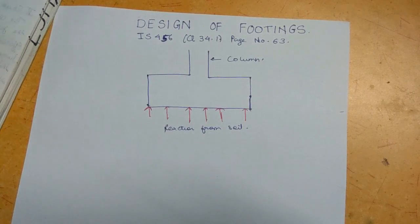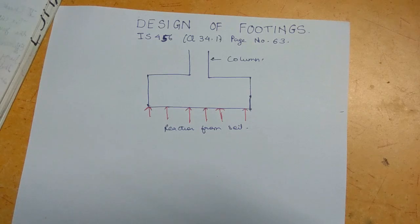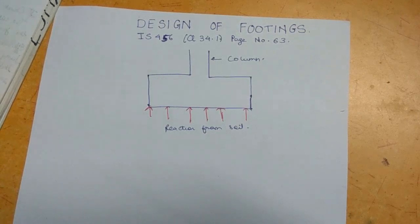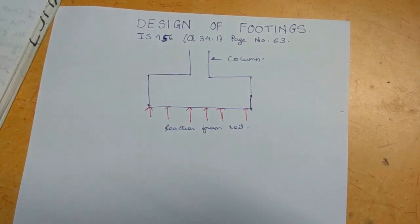Not much is given in the IS code about footings, but if you want to see all the criteria and requirements for footings, you can check the IS code. It is given in clause number 34.1 on page number 63. First, we will see the geometric requirements of the footing.